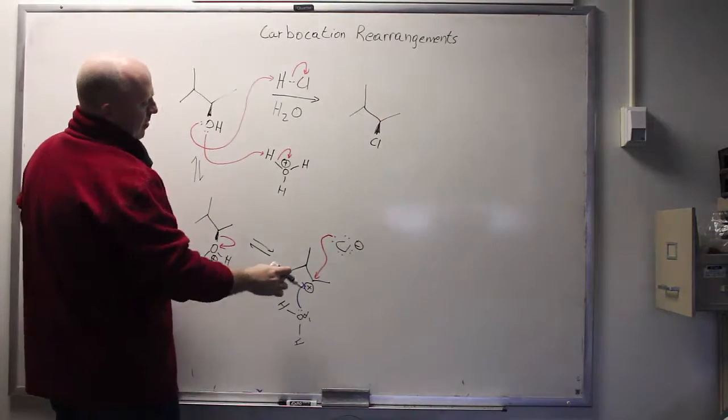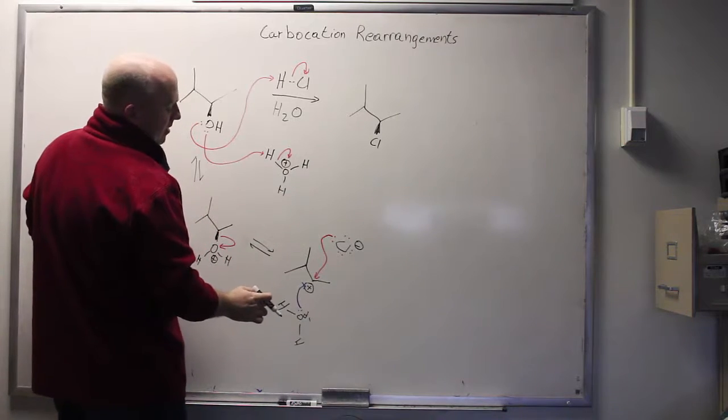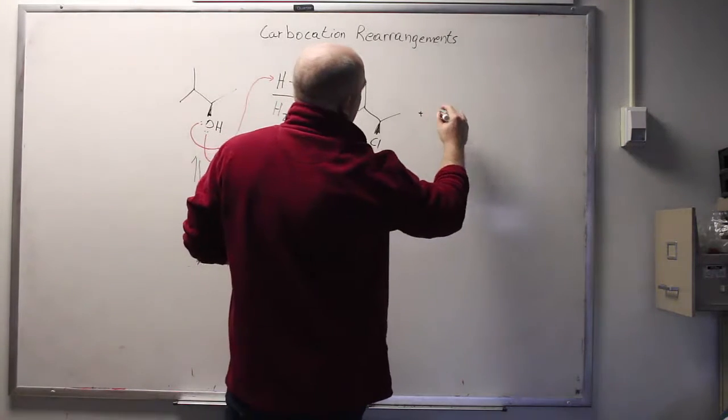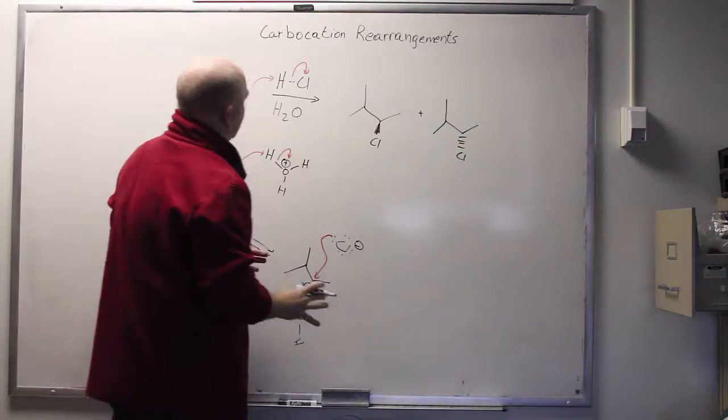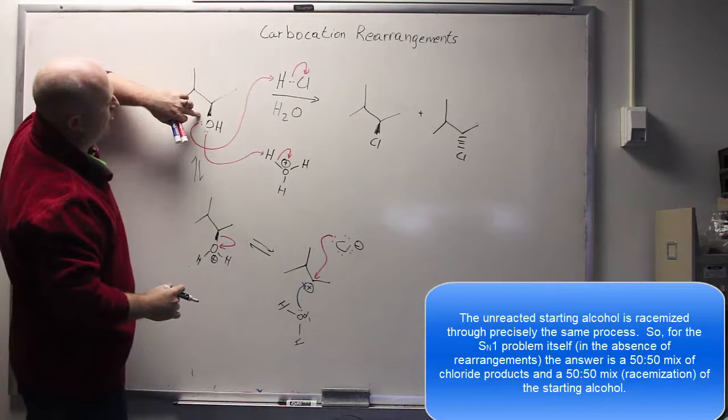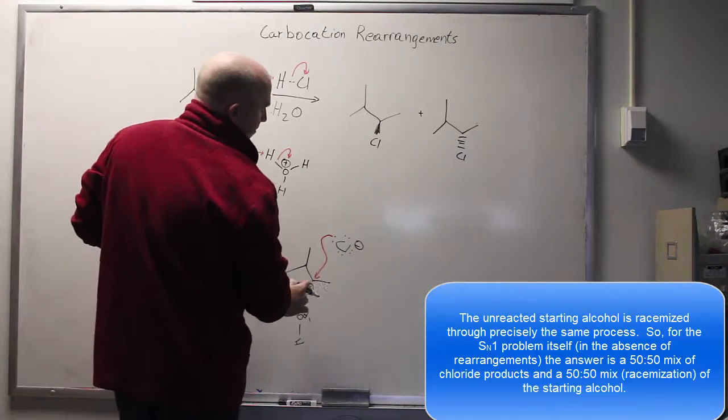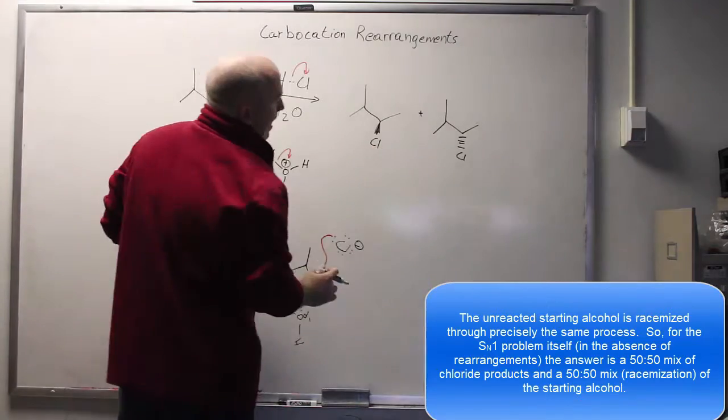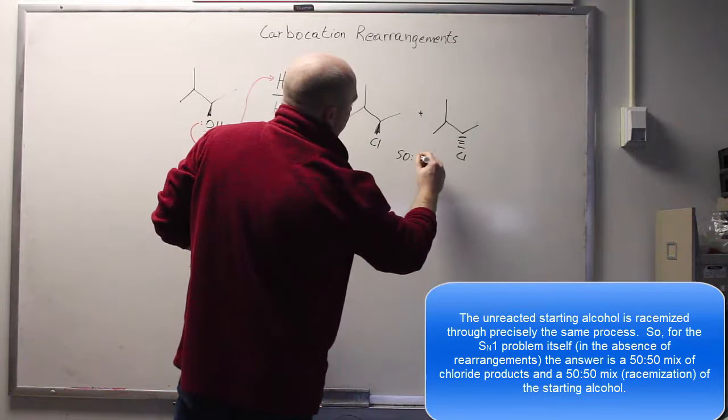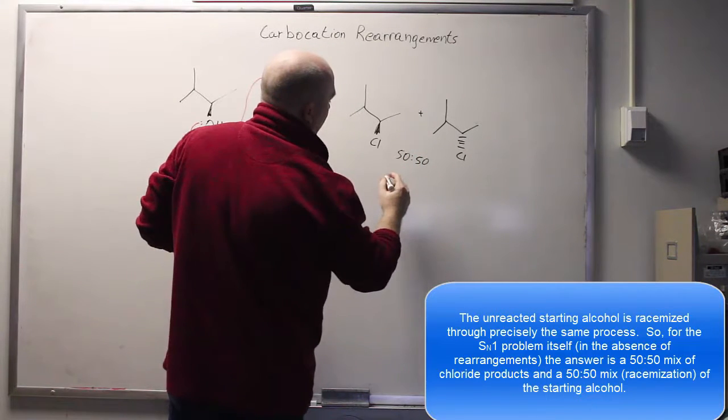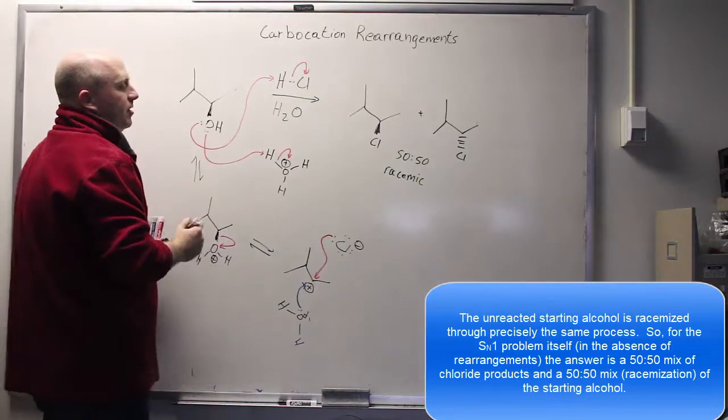Chloride attacking from the top would give rise to this particular enantiomer, but of course this is a flat trigonal planar carbocation, so I might very well generate at the same time the other enantiomer. You might say, hey, this is it, this is what I'll make. I will turn this into a better leaving group, it will leave on its own, I make the carbocation, Cl⁻ attacks from the top or the bottom, and thereby I generate those two enantiomers—a 50-50 mix, a racemic mix of enantiomers.